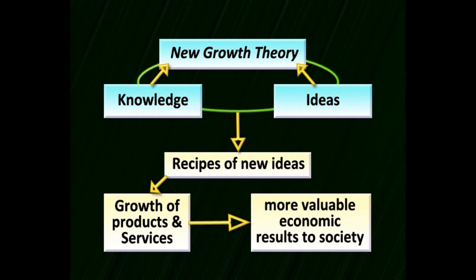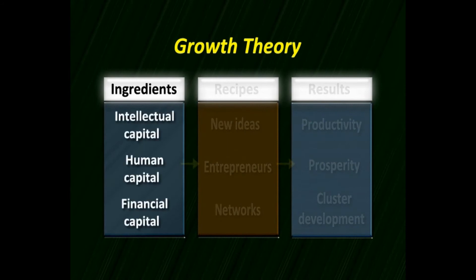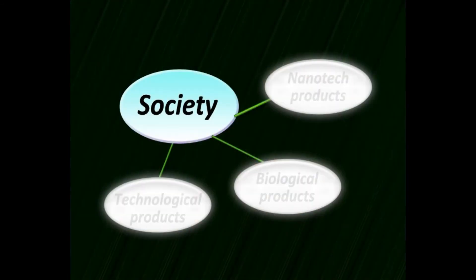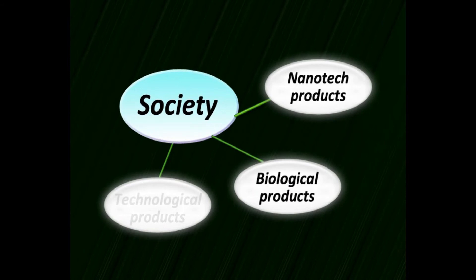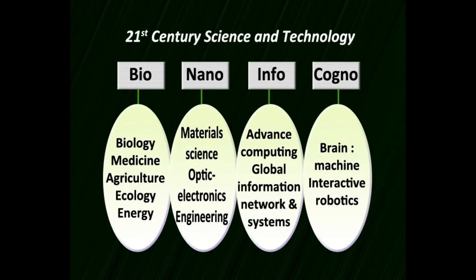The new growth theory is designed by knowledge and ideas. Recipes of new ideas in the right combination give you the right growth in products and services with more valuable economic results for society. In this model of growth theory, the ingredients required are intellectual capital, human capital, and financial capital — combined in a recipe of new ideas. Entrepreneurs and networks connected together give you productivity, prosperity, and cluster development of society, producing a high-tech society designed by nanotech, biological, and technological products.